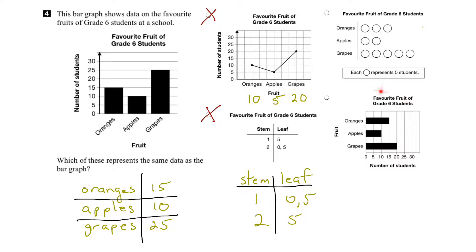Let's move on to this option here. In this case, the bars are given horizontally. Looking for oranges, the number of students who like oranges is fifteen. The number of students who like apples is ten. And the number of students who like grapes is twenty. If we compare these values: fifteen with fifteen matches, ten apples matches ten apples, but grapes here — twenty versus twenty-five — don't match. Therefore, this is not an accurate representation of the data.